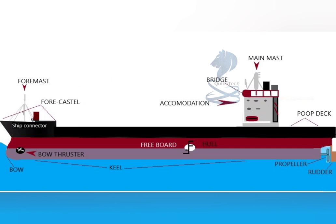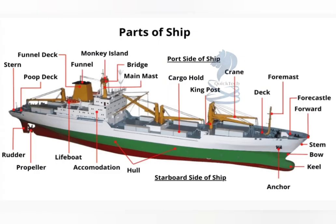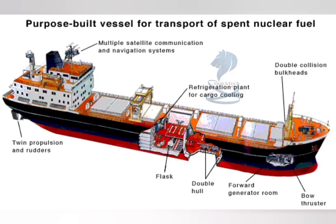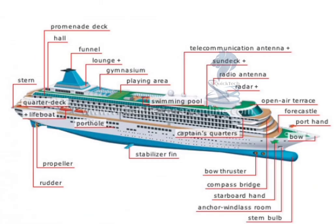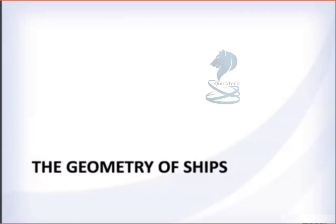Good day all, welcome to this video. In this video we will see different parts of a ship and will learn the names of these parts of a ship in shipping terms. Generally a ship has three main parts: the hull, an engine room, and a navigation bridge. These can be further divided into visible and invisible parts. So let's begin with the learning.